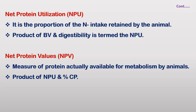When we combine biological value and digestibility, then NPU is obtained. Next, Net Protein Value, or NPV, is the protein which is actually available for metabolism by animals. The product of Net Protein Utilization and the percentage of crude protein gives us the Net Protein Value.